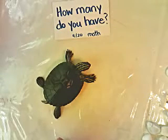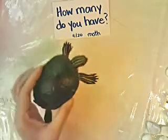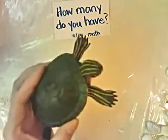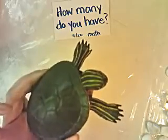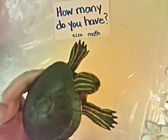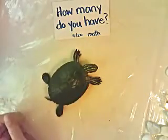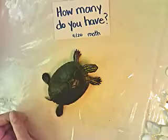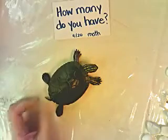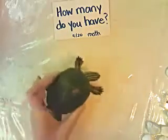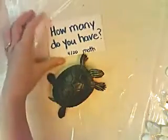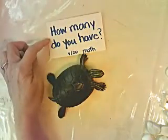This video is about counting and comparing at home with your child. We're going to use this plastic turtle as Rex's stunt double, because even though it would be fun to take Rex out of her tank and bring her over here on the table, she really wouldn't like it and she would crawl away. So here is Rex's stunt double instead. This is about how many do you have for math?